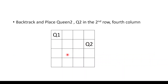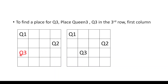With Q2 in the fourth column, we again try to place Q3 in the third row. Column 1 is not possible — Q1 and Q3 would be in the same column. Column 2 is valid: it satisfies all constraints — no two queens share the same row, column, or diagonal. This is a valid position for Q1, Q2, and Q3.